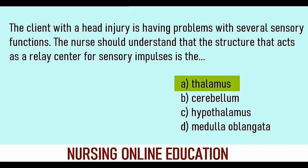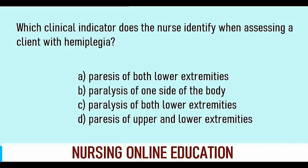Answer: Thalamus. Which clinical indicator does the nurse identify when assessing a client with hemiplegia? Options — Paralysis of both lower extremities, Paralysis of one side of the body, Paralysis of both lower extremities, Paralysis of upper and lower extremities. Answer: Paralysis of one side of the body. Hemiplegia is paralysis of one side of the body.